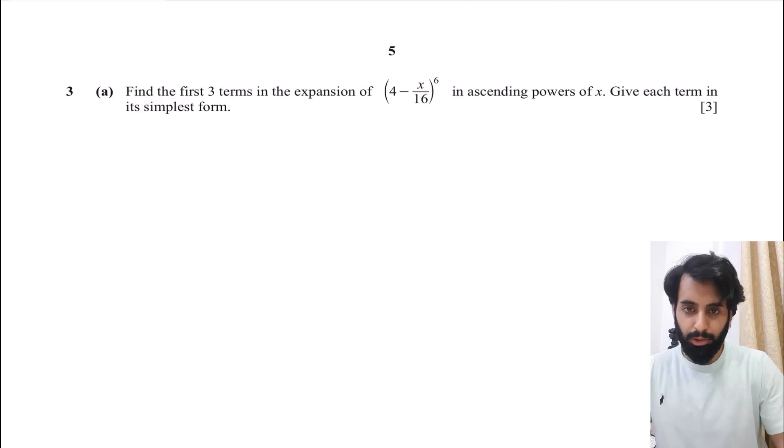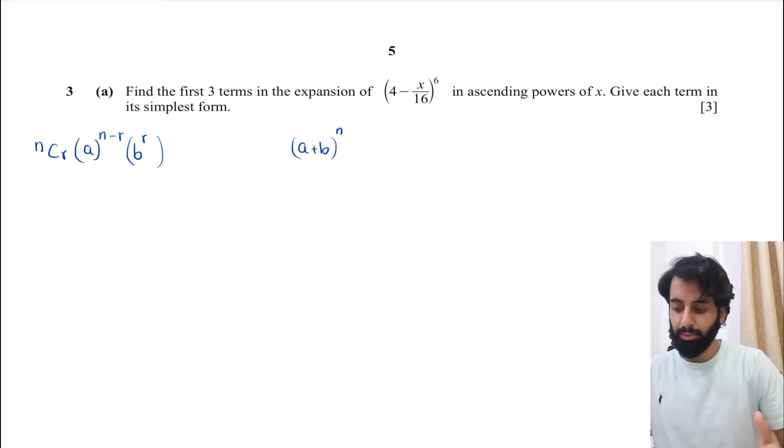Now, the formula that we use for binomial expansion goes as follows: nCr × a^(n-r) × b^r. And what you may be wondering is what's a, b, r, and n? So basically, this is applied when you have two terms with a plus or minus sign in between, and the entire expression is raised to the power of n.